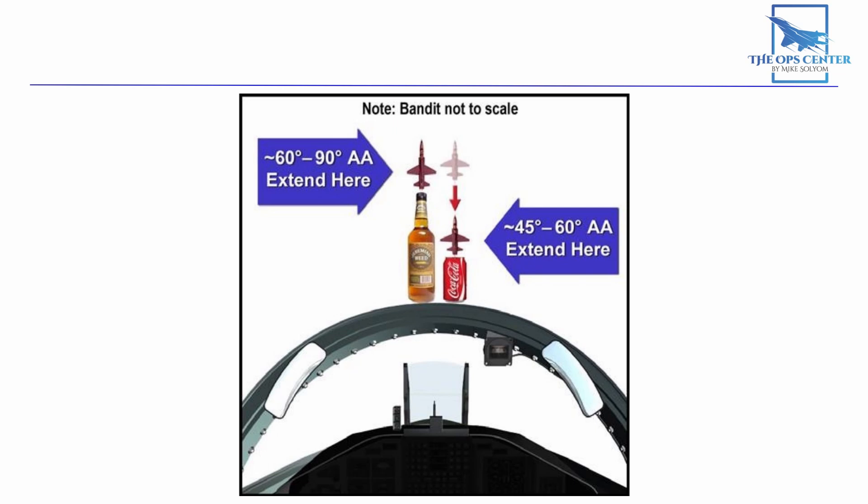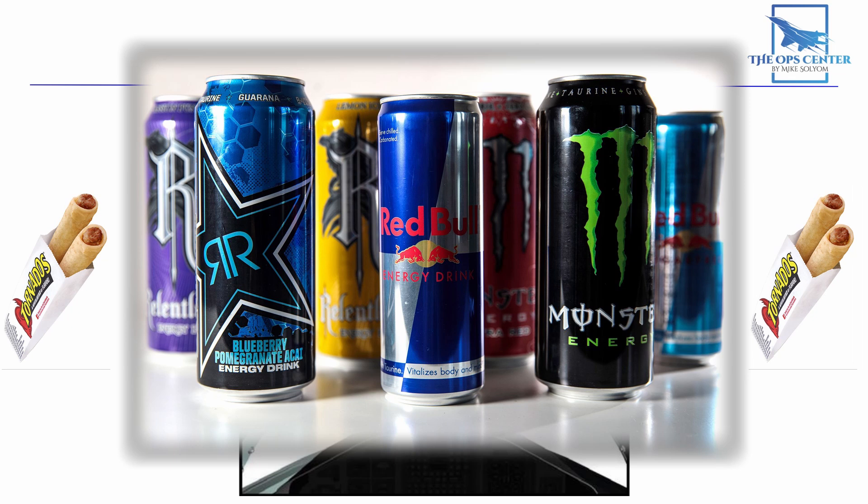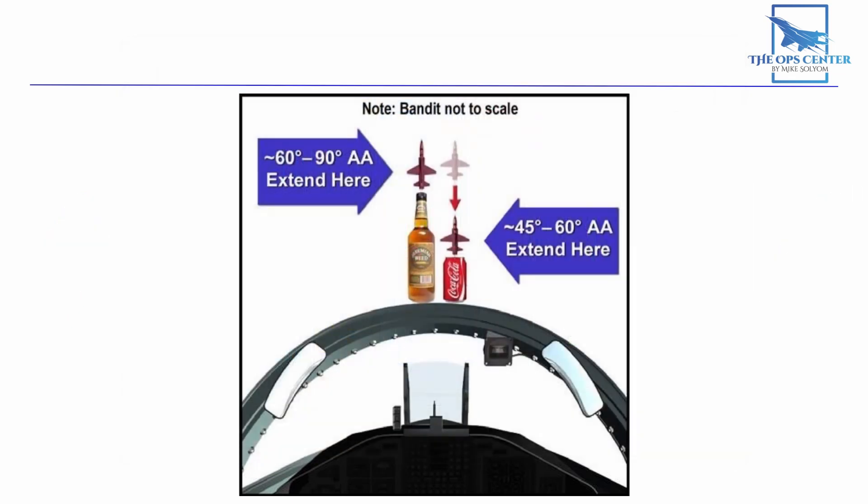For my enlisted viewers, think of it as a stack of two energy drink cans. If you still have trouble visualizing it, then think of this as just above the assessment window. These cues go up to 90 degrees AA.